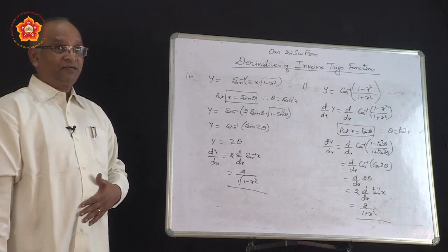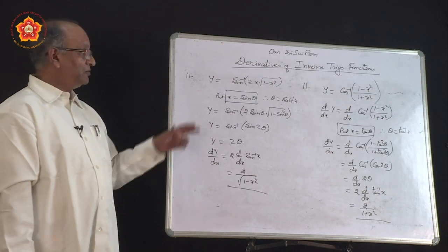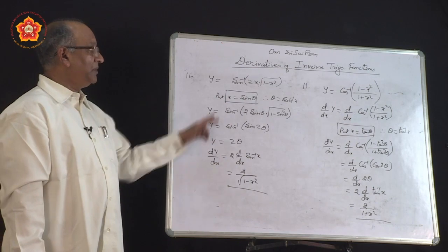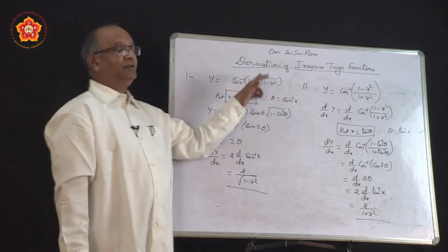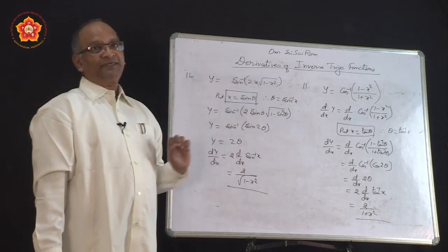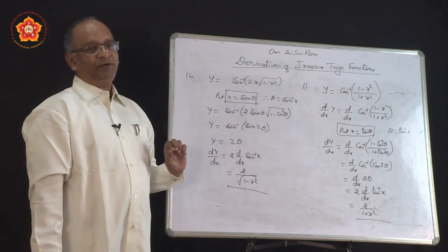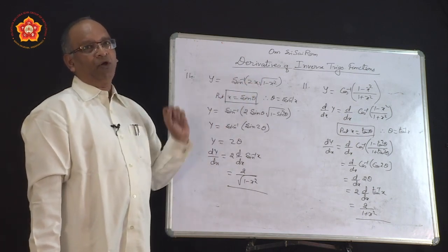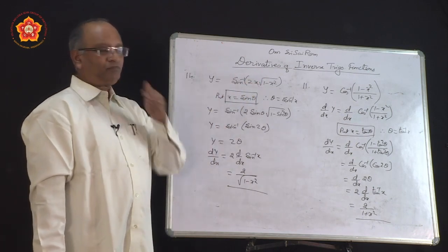Whereas if you want to do the same problem using the chain rule, it will become too long. So the substitution method is clearly preferred for inverse trigonometric function problems.